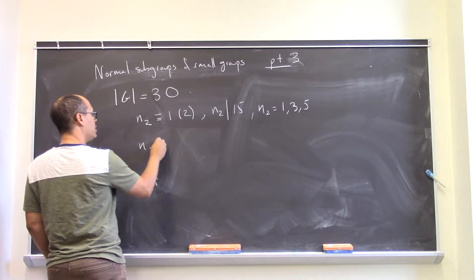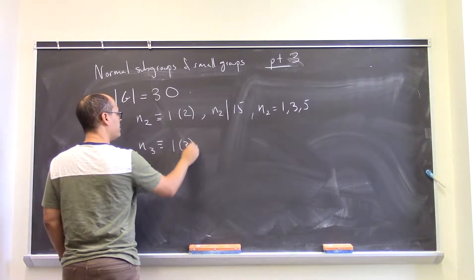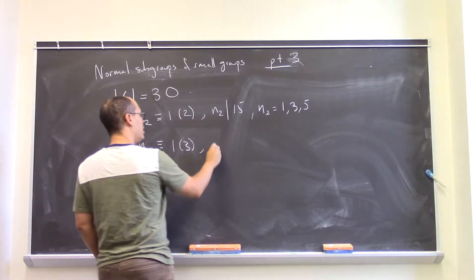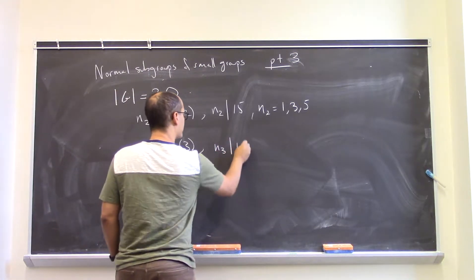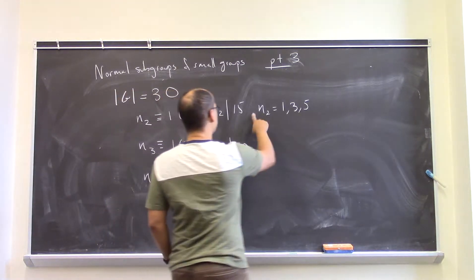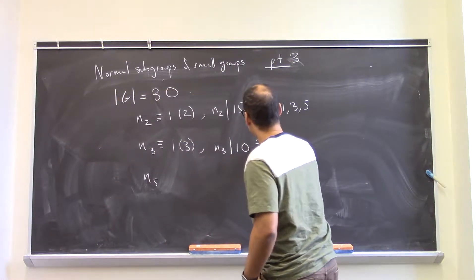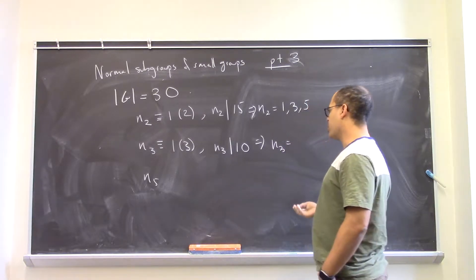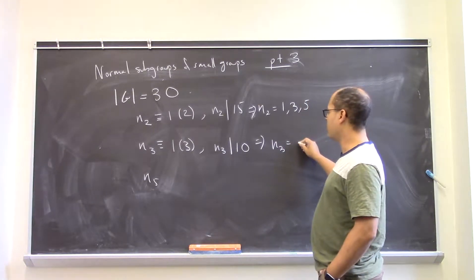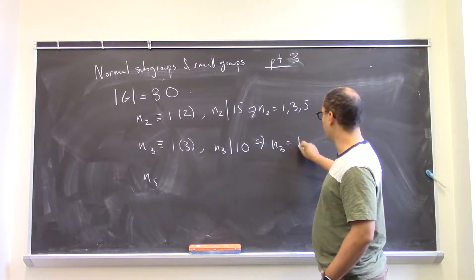And N3 is going to be congruent to 1 mod 3, 1 more than a multiple of 3. And N3 is going to divide 10. So therefore, we have that N3, well, 1 more than a multiple of 3, a divisor of 10, that means it could be 1 or it could be 10.